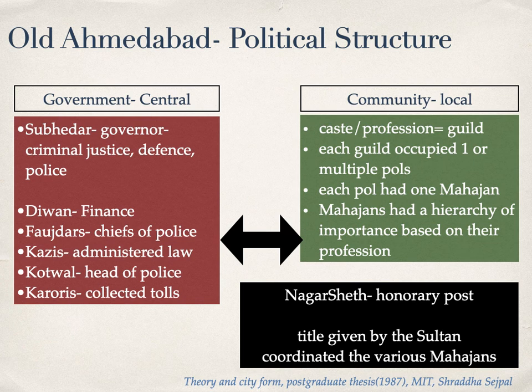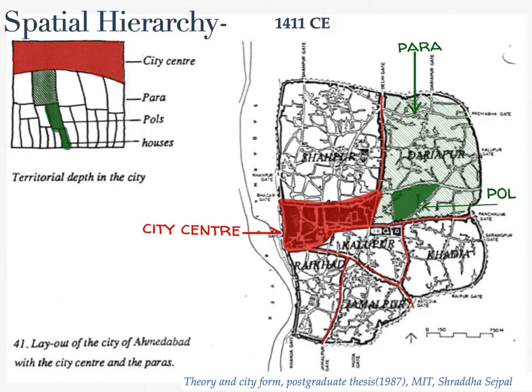However, the rich and the poor lived side by side. At the community level, each pole was represented by the Mahajan. Management of local issues was done by the community. City level management like finance, tolls and law were taken care of by the government headed by the governor, while the Nagar Seth negotiated between the government and the Mahajans. This social structure is directly reflected in how the city is laid out.